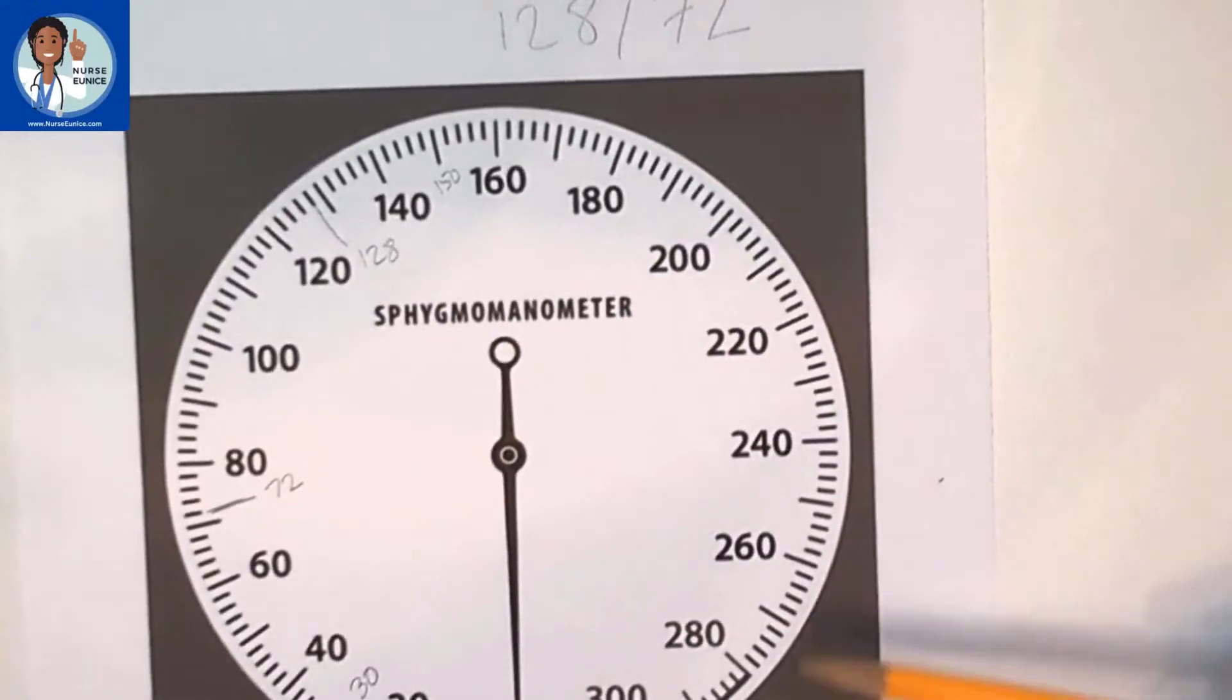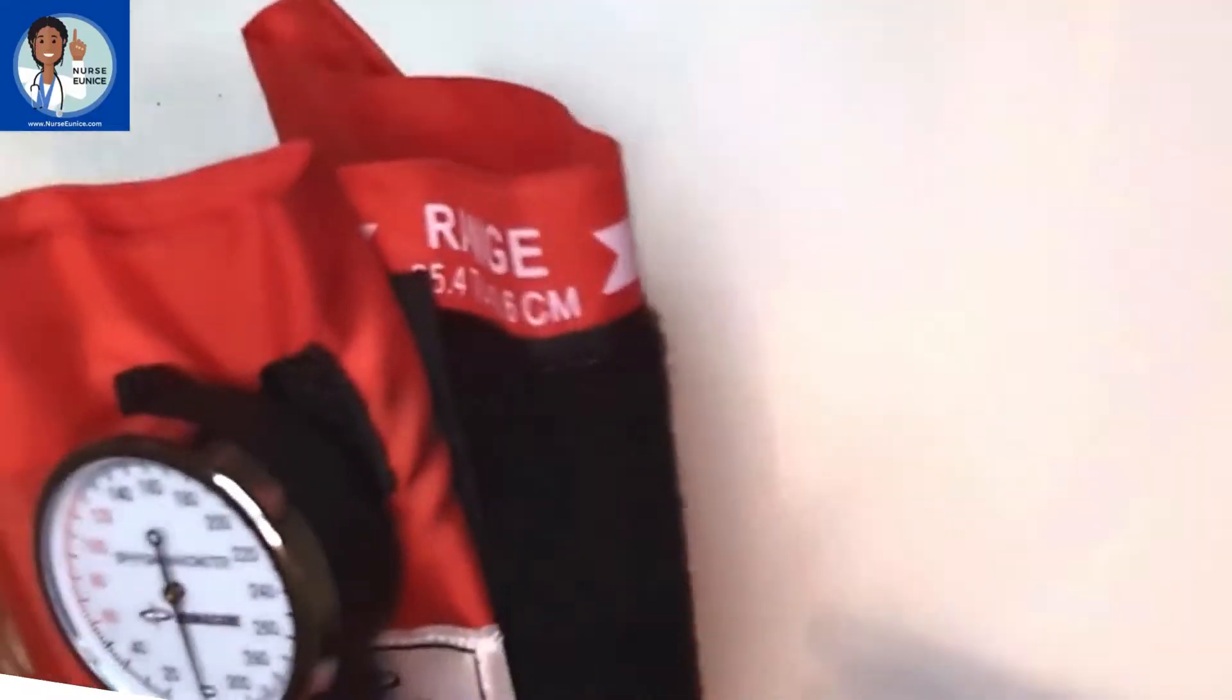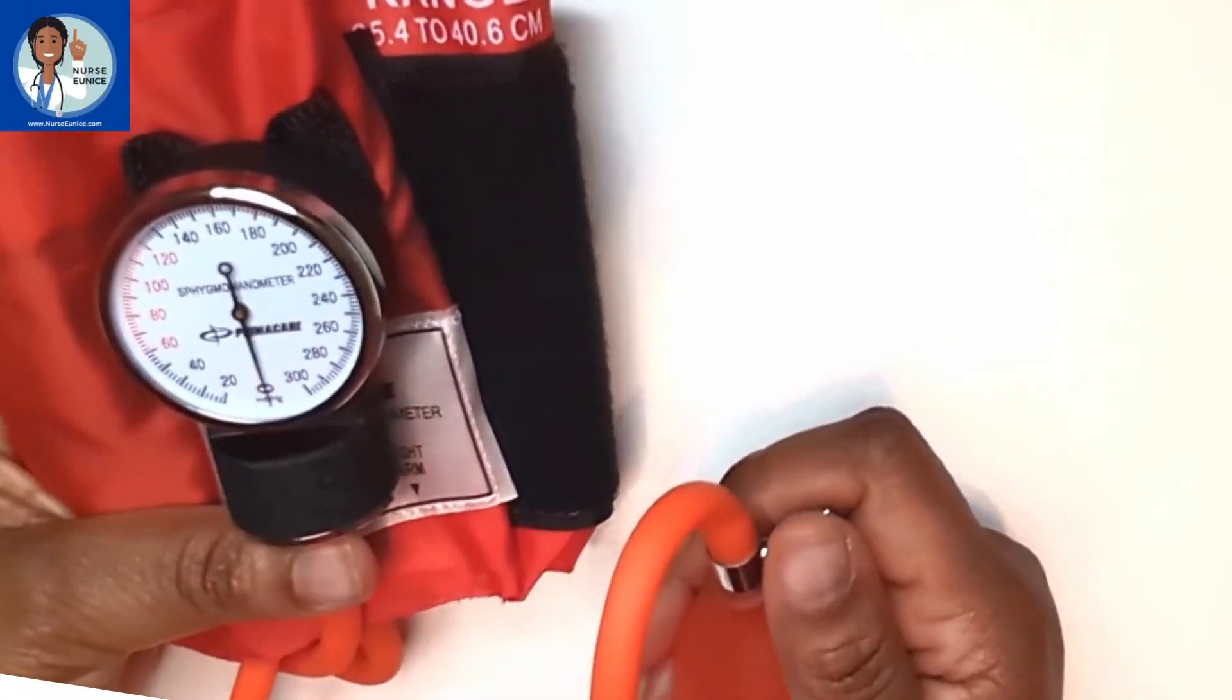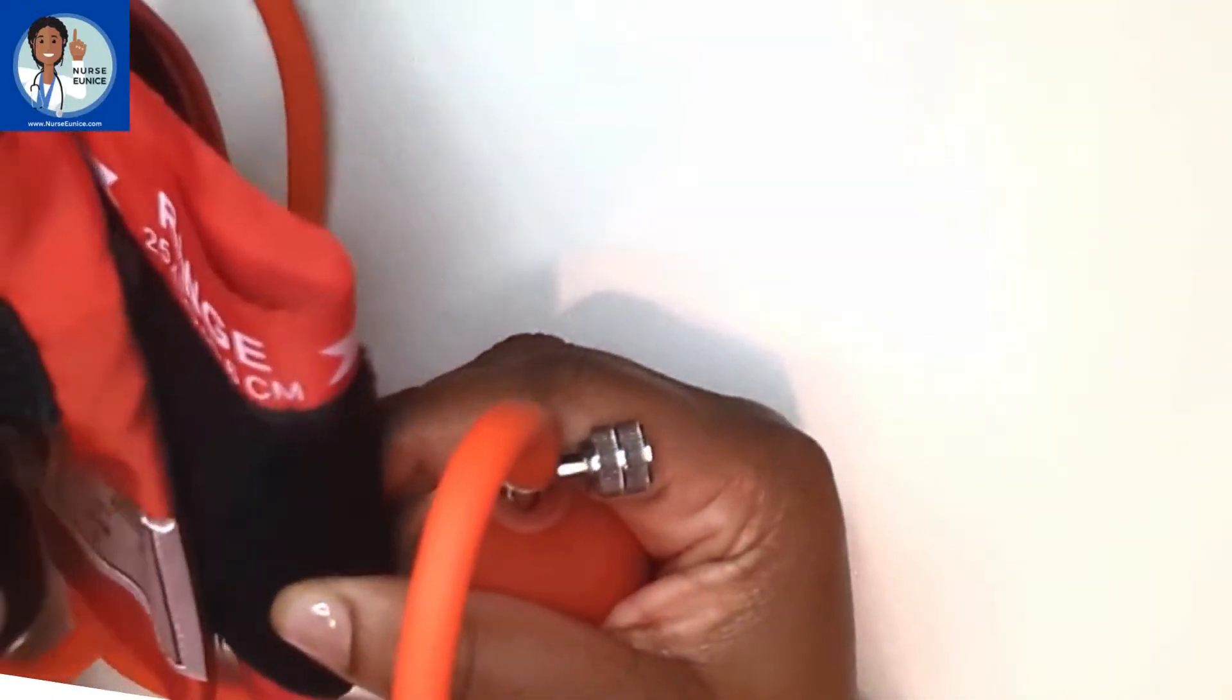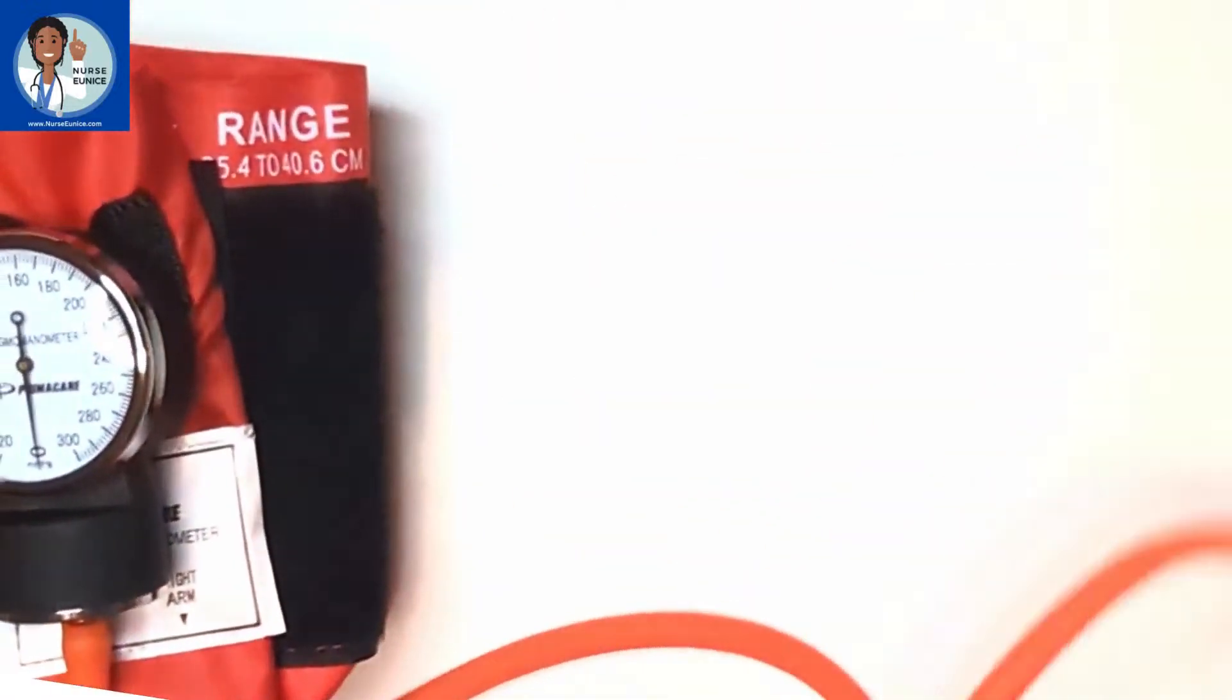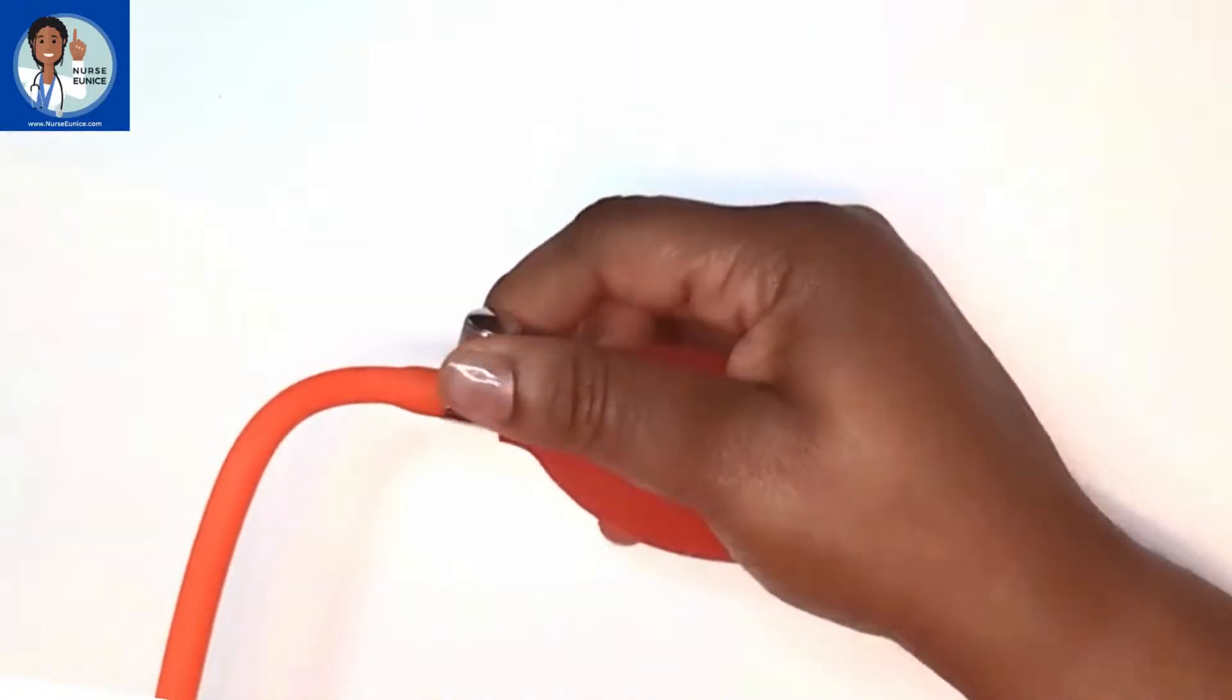Now let's put it all together. We know how to read the gauge. Whenever we're practicing, I always ask that you practice without an arm in the cuff until you know what you're doing. I just have the cuff wrapped on itself. We talked about this bulb. We have the air valve here.